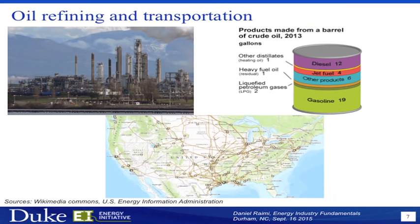The petroleum transportation system is really big in the United States. People talk a lot about the Keystone Pipeline and other pipelines, but there's a whole lot of pipelines around the country. This figure shows crude pipelines as filled-in lines, petroleum product pipelines like gasoline or diesel as dotted lines, and refineries as those little boxes with oil barrels on them. Refineries are concentrated along the Gulf Coast as well as around some other population centers in the country.